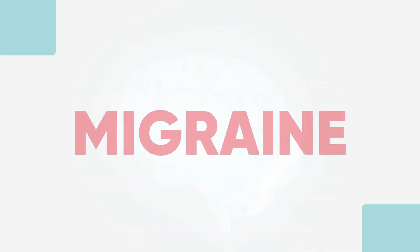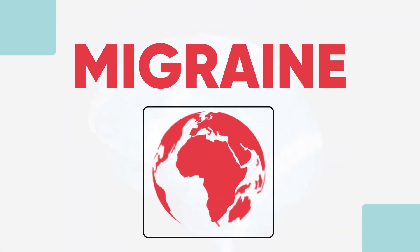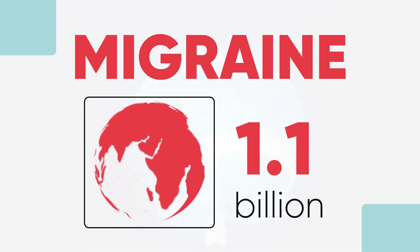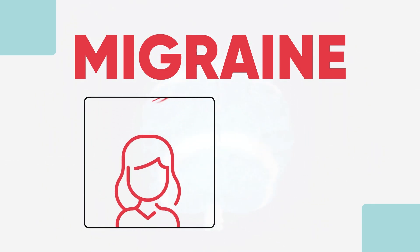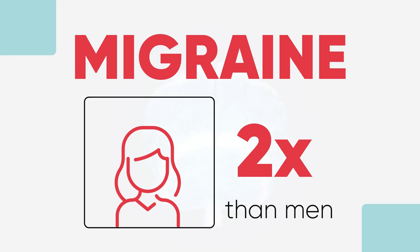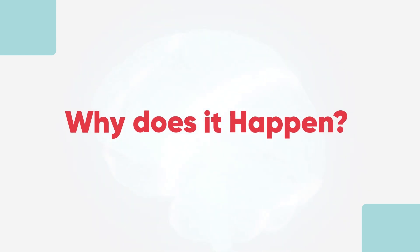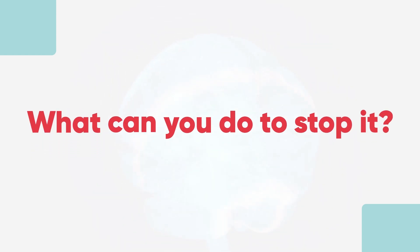Migraine is one of the most common neurological problems faced in the world. More than 1.1 billion people around the world face migraine, and women have two times more risk than men in getting migraine. It can be disabling — students with migraine are not able to study, working professionals are not able to go to work, you can't do household chores, you can't meet your friends. It takes a toll on your social life, personal life, and professional life. So what happens in migraine, why does it happen, and what can you do to stop it?